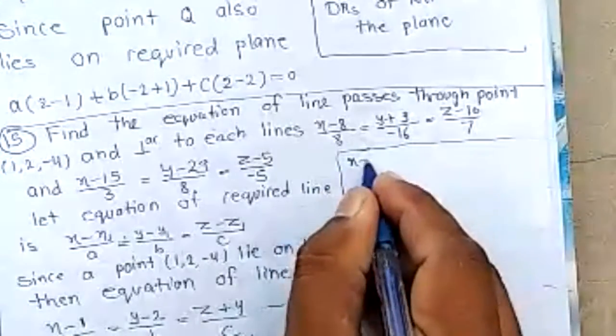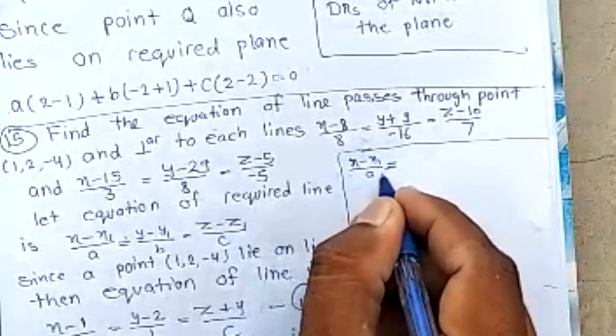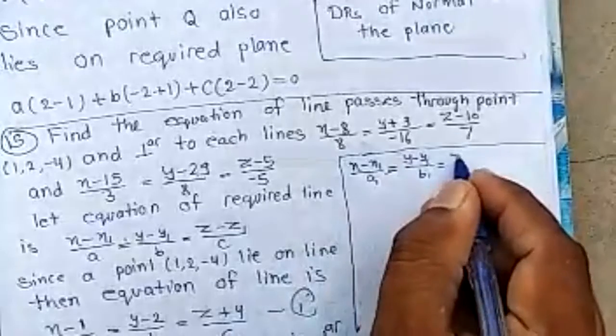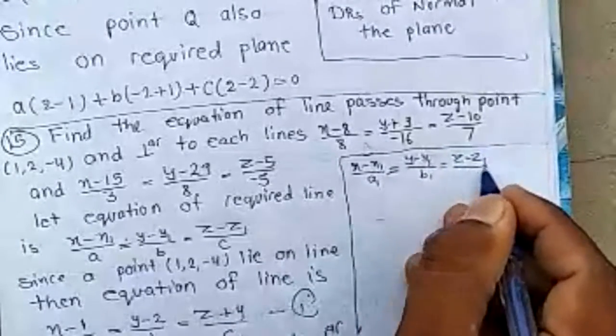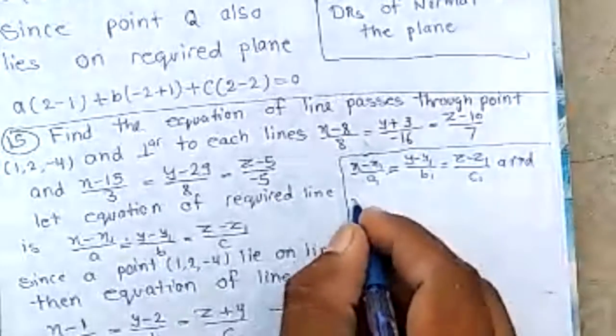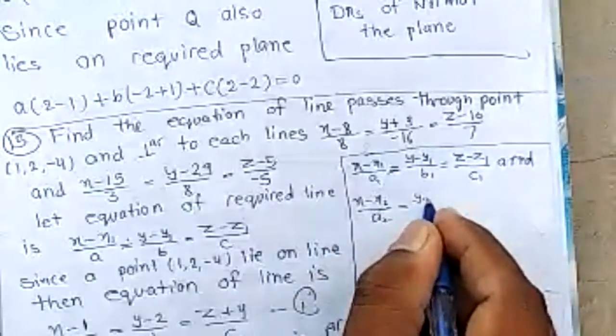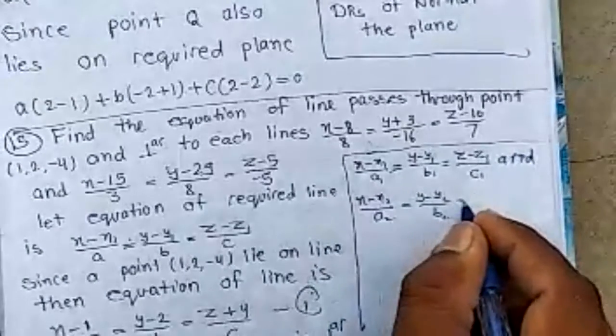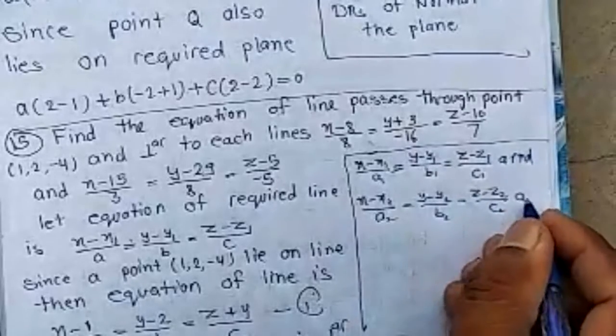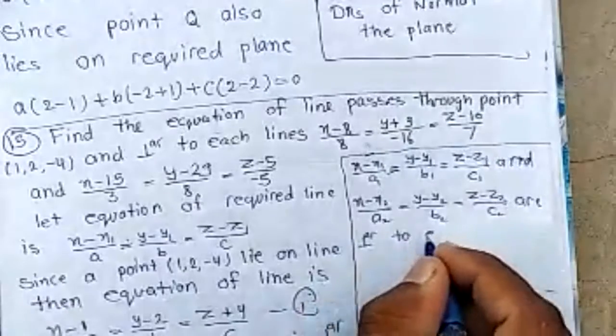if first line x minus x1 by A1, y minus y1 by B1, z minus z1 by C1 and x minus x2 by A2, y minus y2 by B2, z minus z2 by C2 are perpendicular to each other,